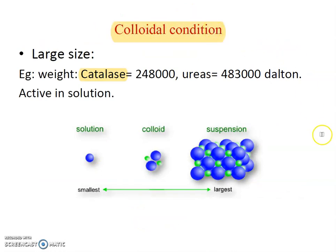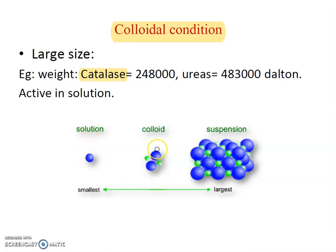Colloidal condition is another property of enzyme. The size of enzyme molecules is large — for example, catalase is 248,000 daltons. The size of these enzyme molecules is larger than the substrate molecules. When they mix in water, they make a colloidal solution. Molecules up to 100 nanometers make a colloidal solution, while larger molecules make a suspension solution. Because of their size, enzymes make a colloidal solution.